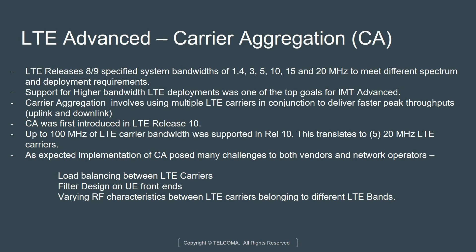Implementation of CA posed many challenges to both vendors and network operators, because now we have to have multiple LTE carriers serving the same user. There are key challenges around timing and scheduling that were not present with only one LTE carrier per user. Some of those challenges include load balancing between LTE carriers — how do you ensure no one carrier becomes overly loaded? There were also challenges on filter design on UE front ends, because UEs had to tune to more than one carrier.